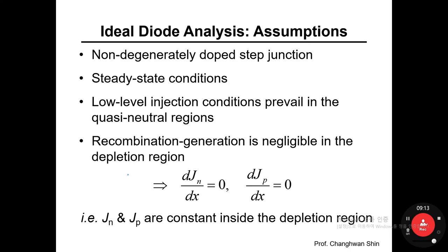Let's begin the ideal diode analysis by reviewing the assumptions used. The first assumption is a non-degenerately doped step PN junction. Using cutting-edge CMOS fabrication technology, a step junction can be implemented. Non-degenerately doped means lightly doped — the upper limit is around 10 to the 18 or even 10 to the 19. Very heavily doped junctions go beyond ideal diode analysis, meaning additional corrections beyond the ideal diode result would be needed.